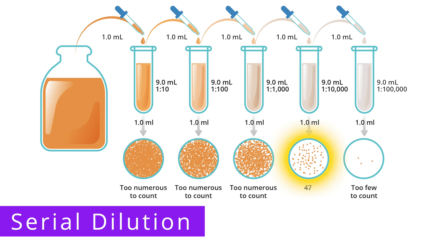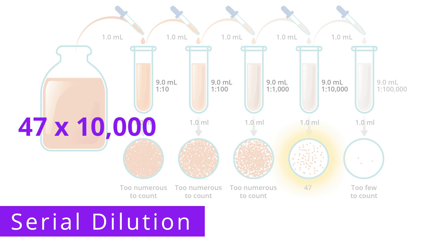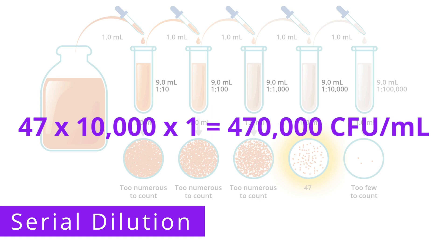So we are going to use this plate to estimate how many colony-forming units are in the original sample. To do the math, we take the number of colony-forming units on this plate, which is 47, multiply that by the dilution factor of the tube, which is 10,000, and then multiply that by the volume of the sample inoculated on the plate, which is 1 milliliter. So we get 470,000 colony-forming units per milliliter.